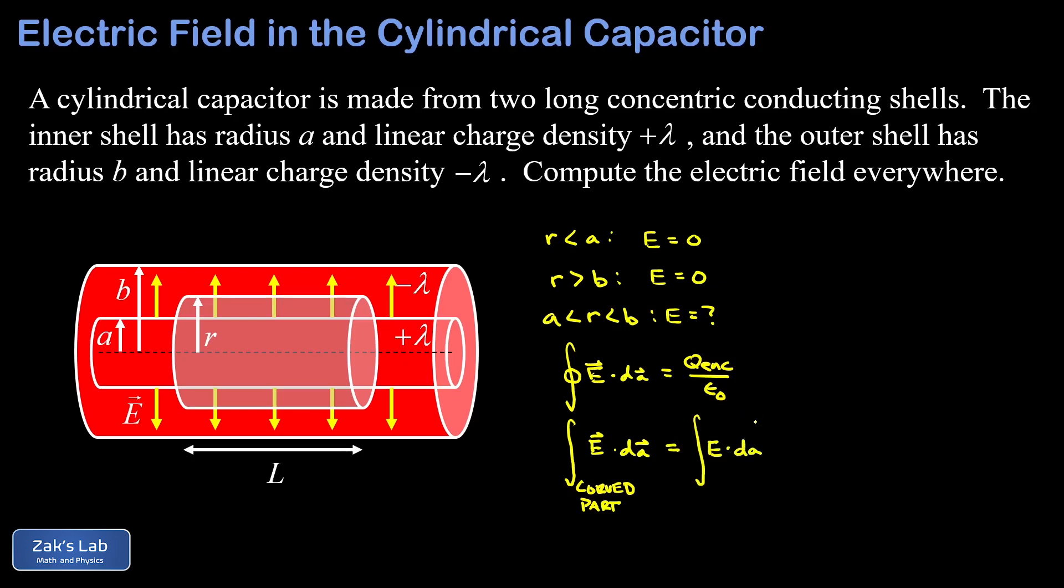Next we realize that the electric field is constant over that entire curved part because at every point you're an equal distance from that inner charged cylinder. A constant can be factored out of the integral, so I end up with E times the integral of dA over the curved part. But the integral of dA over the curved part is simply the area of the curved part.